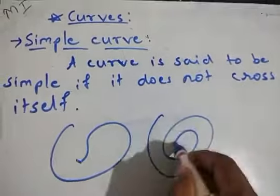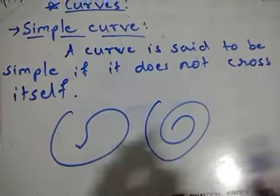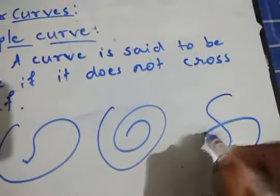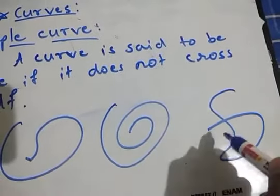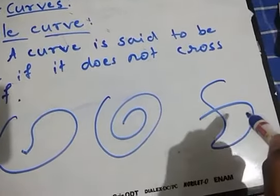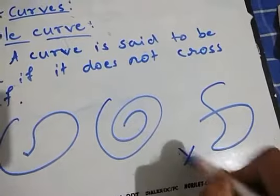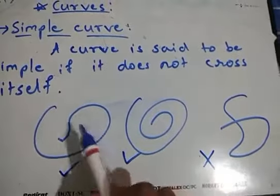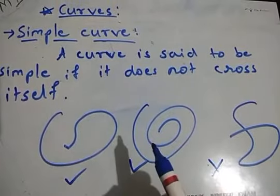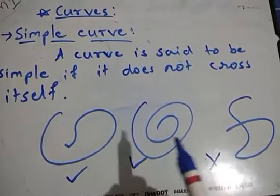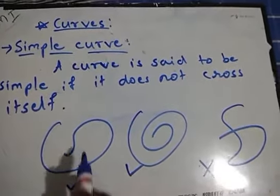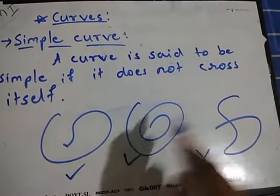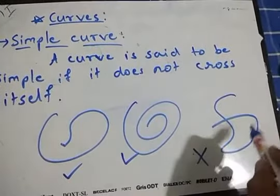These are curves which are not crossing themselves. But in this example, if I draw a curve like this, this curve is crossing itself. So this is not a simple curve. But these two are simple curves as they are not crossing themselves.